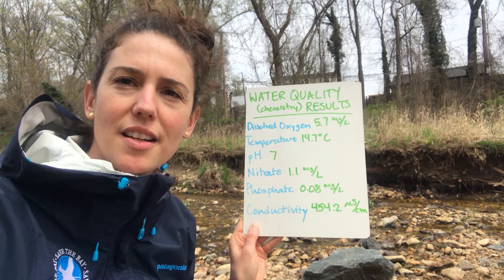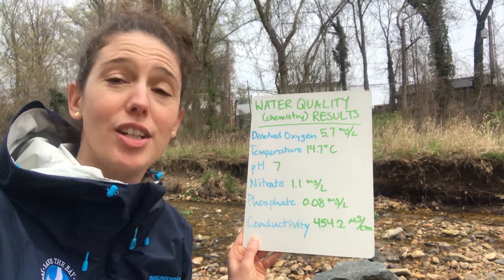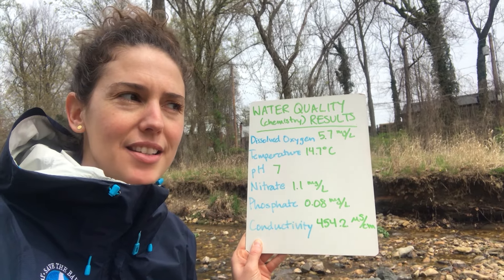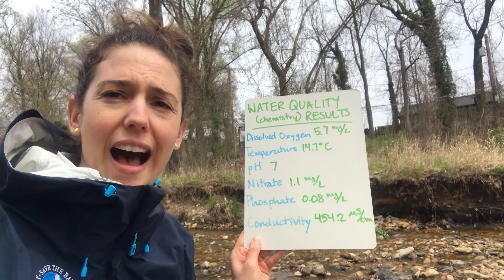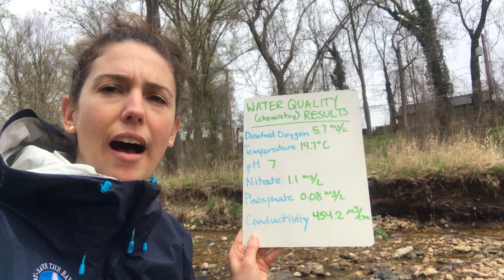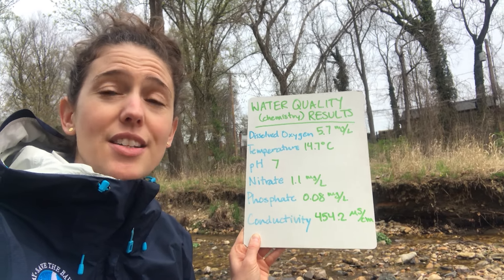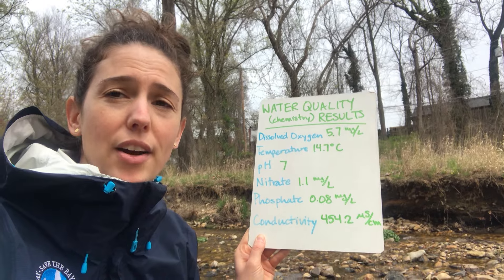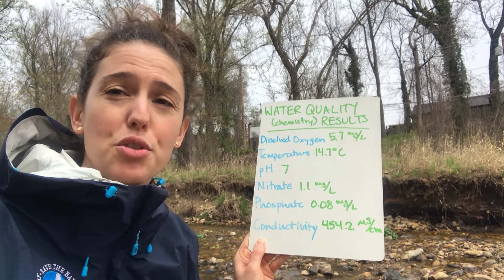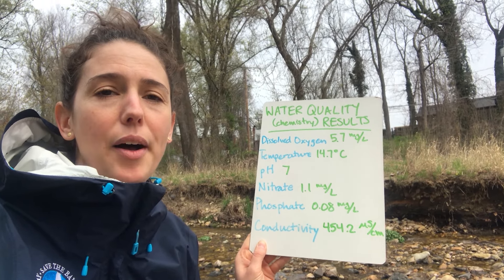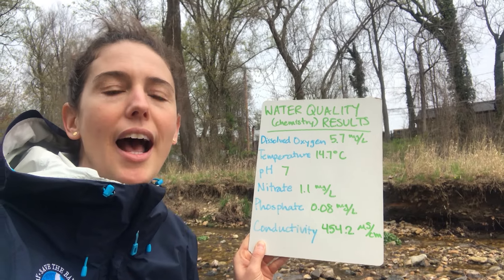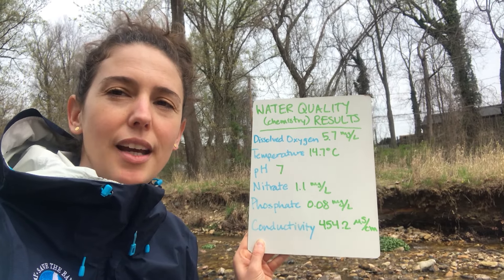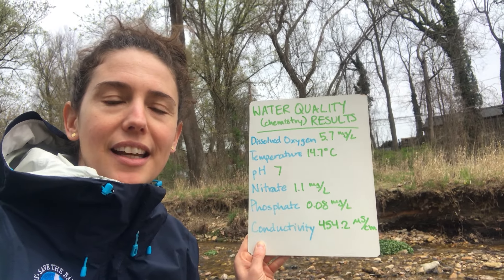To quickly sum up our water quality results today: we've got a healthy level of dissolved oxygen, even though it's a little lower than I expected. Temperature just tells us it's springtime. pH is right at neutral where we want it. Our nitrate level is a little high. Phosphate is within a normal range. And conductivity is also within the normal range — between about 150 to 500 microsiemens per centimeter. Conductivity measures how fast an electrical current can travel through the water, indicating how many dissolved ions are present. Streams in urban areas can tend to have higher conductivity levels, which is why it's measured in urban and suburban areas as an indicator of stream health.